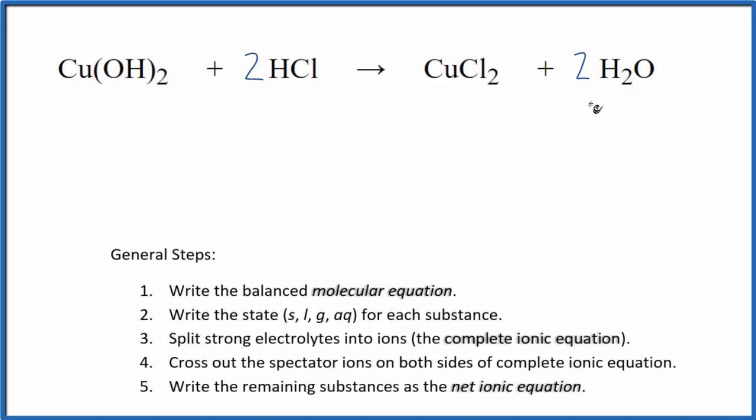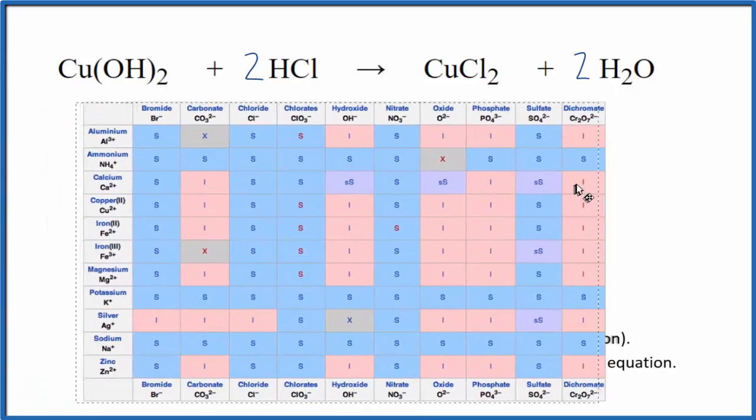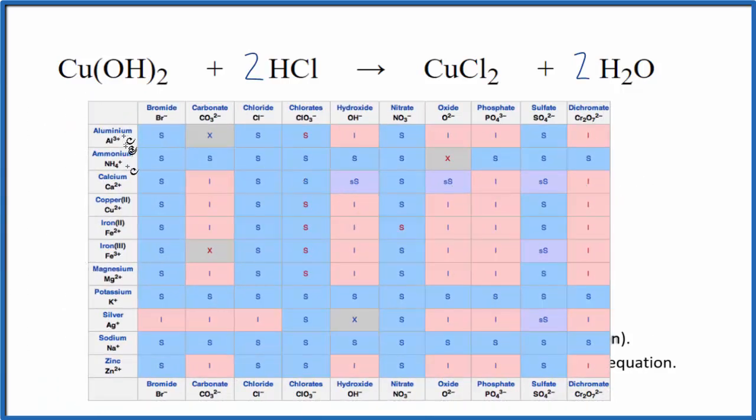Then we need to write the state. Whenever I see hydroxides, I'm a little suspicious, especially with a transition metal. So I want to check and see what the state of this would be in a solubility table. So we pull our solubility table in, and here's copper right here and the hydroxide. So we'll go over here and down. And that I means it's insoluble. It's not going to dissolve, it's not going to dissociate into its ions. So we're going to put an S here. This is solid. So we have the state for this.